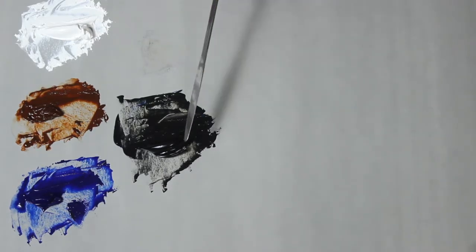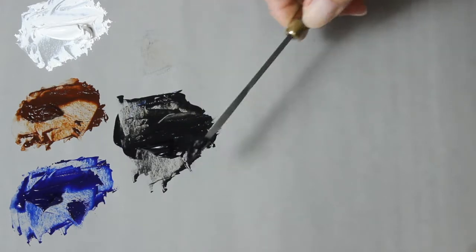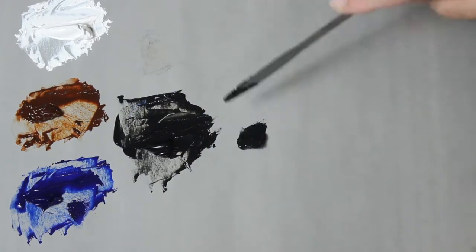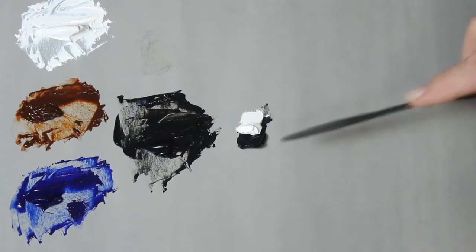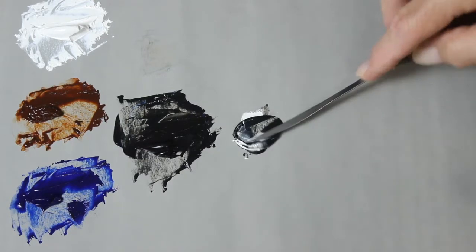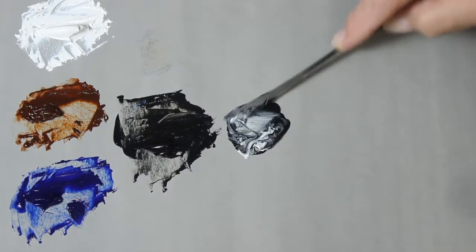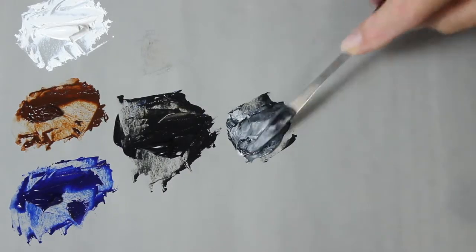For my first step, I'll take some of this black and add an equal amount of titanium white. Now I'll mix these together. This is my 50 percent mixture. It has the same amount of black as white.